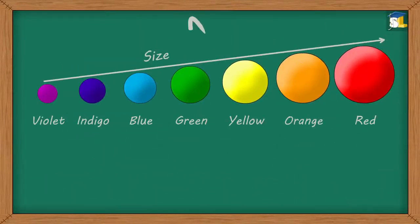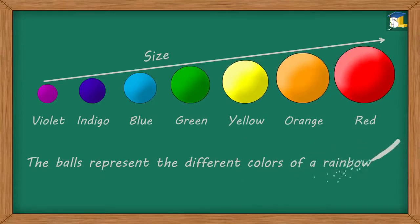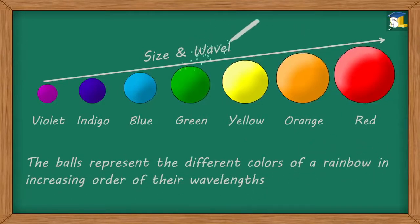Did you notice that the size of the balls increased? Yes, you guessed right. The balls represent the different colors of a rainbow in increasing order of their wavelengths.